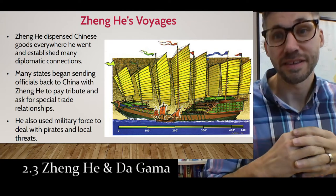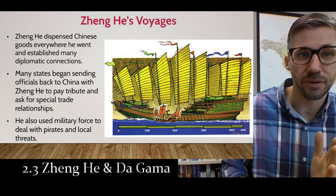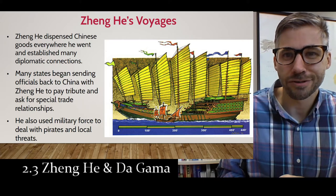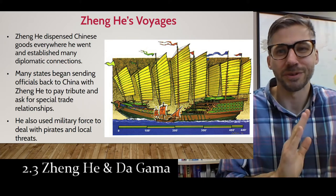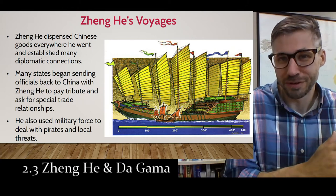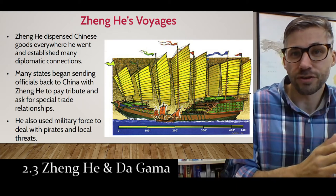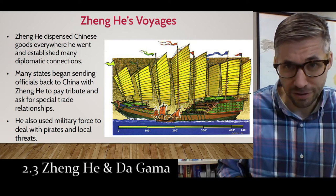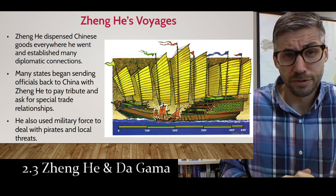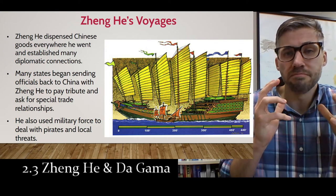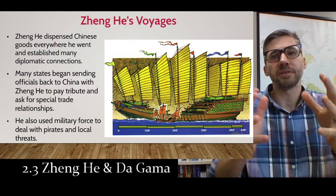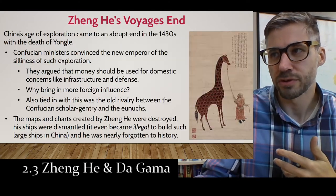Zheng He was setting up diplomatic connections and tributary relationships. He was also cleaning up the Indian Ocean trade network — sort of like the Mongols did with the Silk Roads. As the Mongols made the Silk Roads safer, Zheng He made the Indian Ocean trade network safer by dealing with pirates. So under Emperor Yongle, China was putting tremendous energy and resources into these voyages to bring in wealth through trade and tribute.